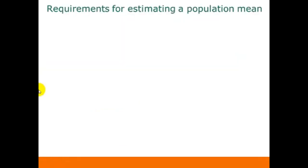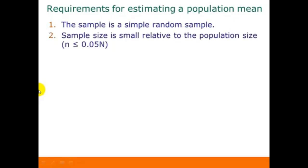First we need to talk about requirements for estimating a population mean. First, the sample is a simple random sample. Second, the sample size needs to be small relative to the population size. So if we have a finite population, then our sample size needs to be less than or equal to 5% of that population size.